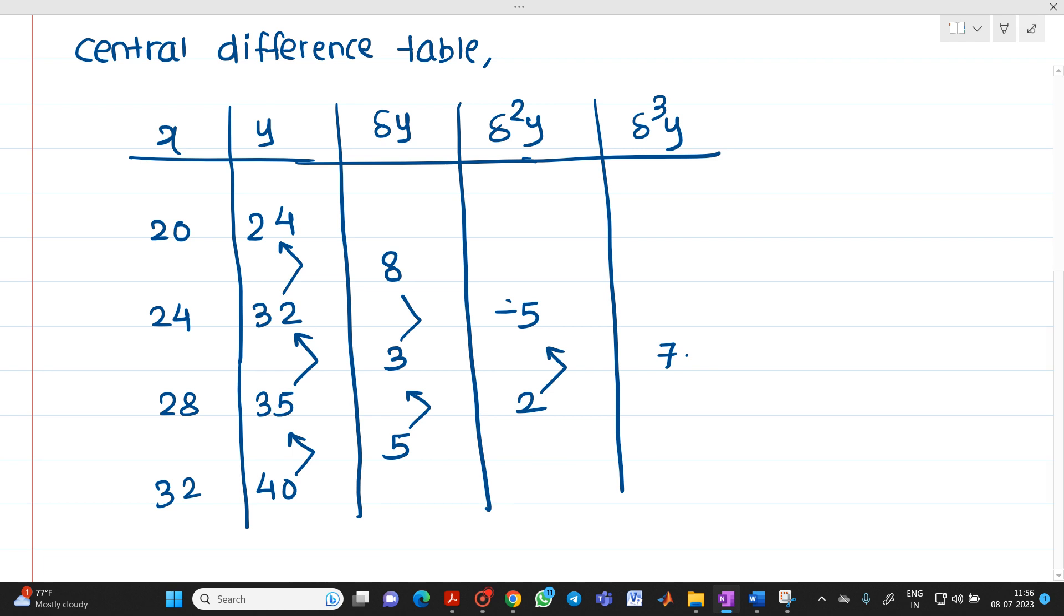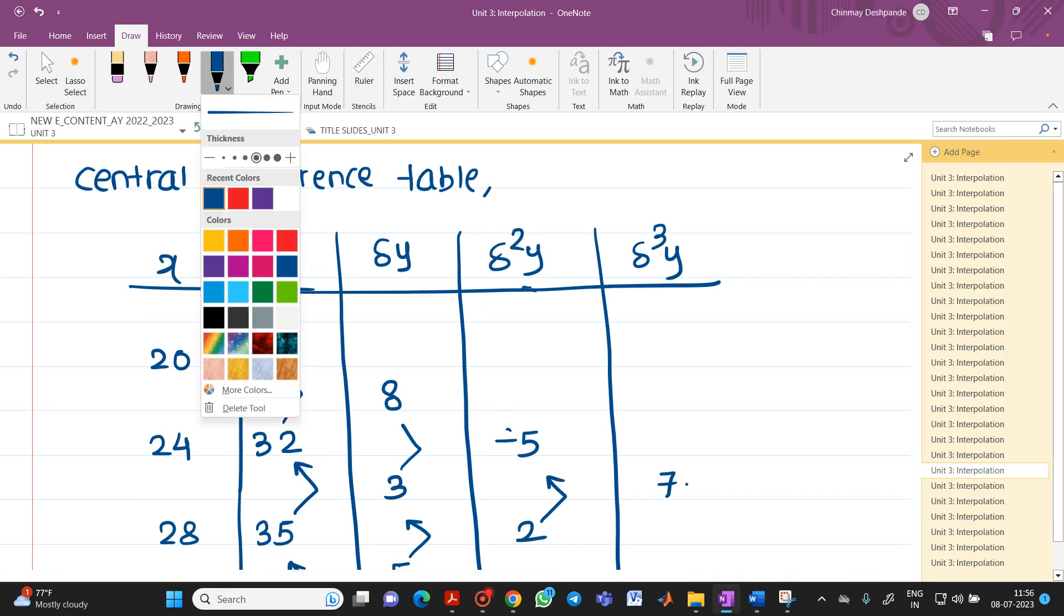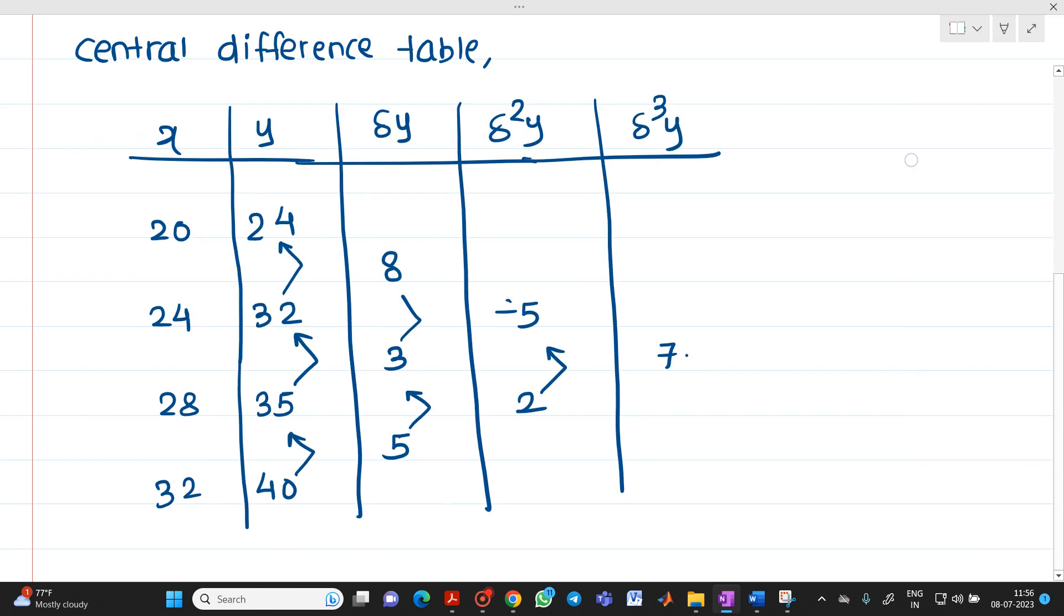Now we are talking about Bessel's formula and we have seen what is the theory associated with it. Theory means what is the formula and how the table has been prepared. So if you see, this is your x₀, this is your x₁. So this will be your y₀, y₁. So while writing this formula, we have to take these values, means these two values.